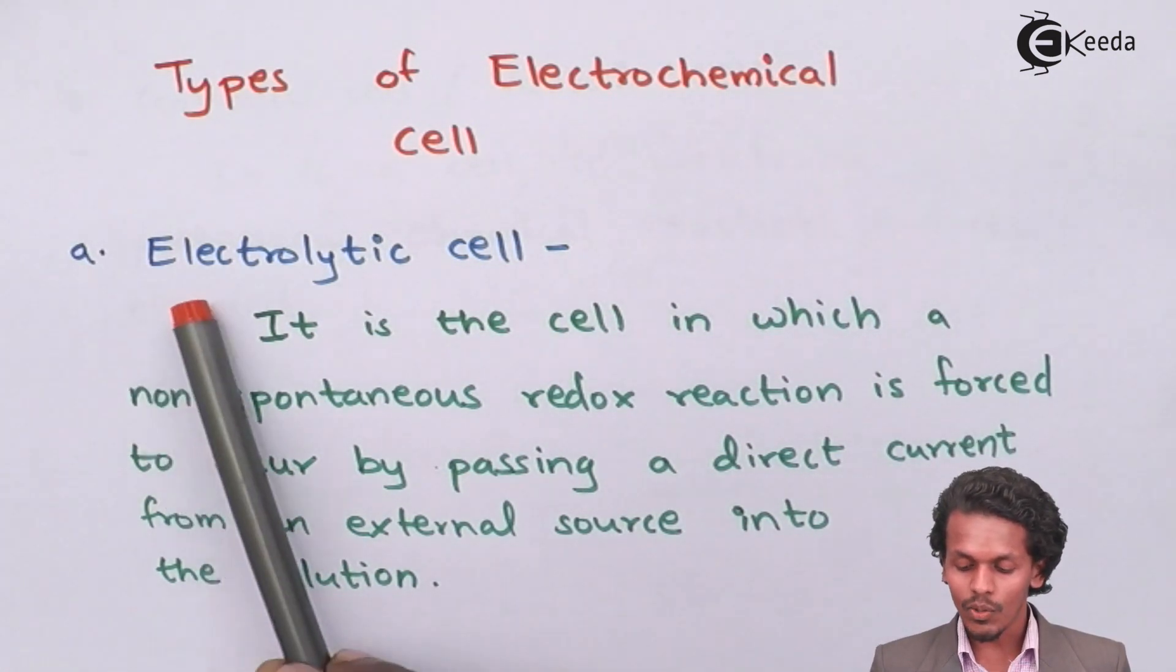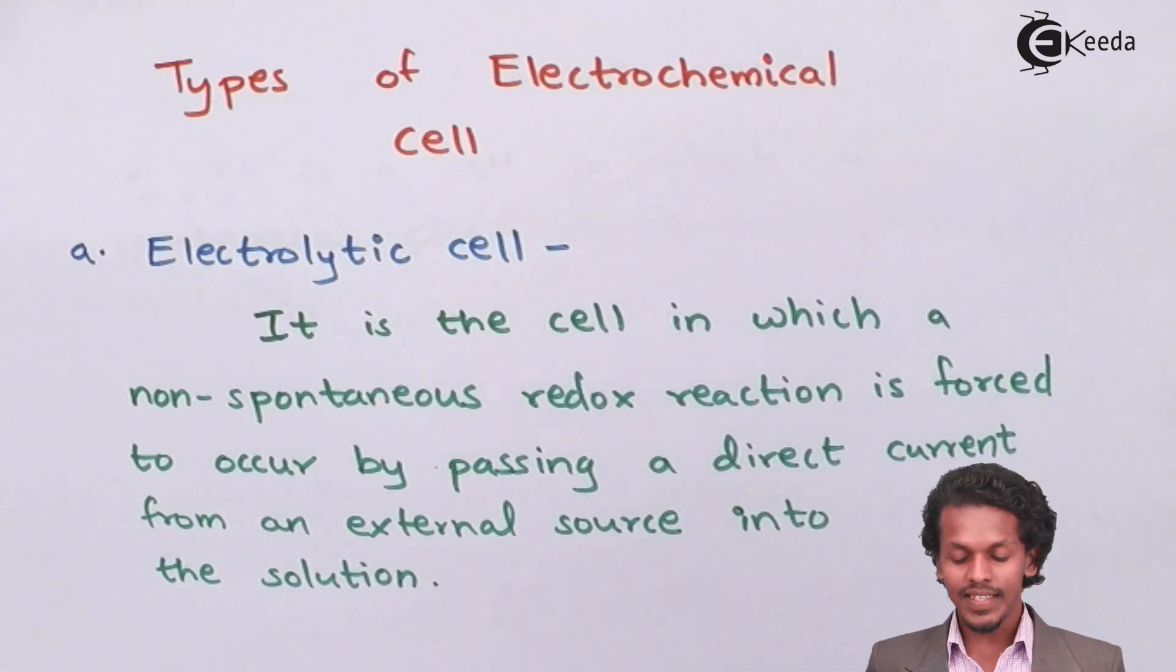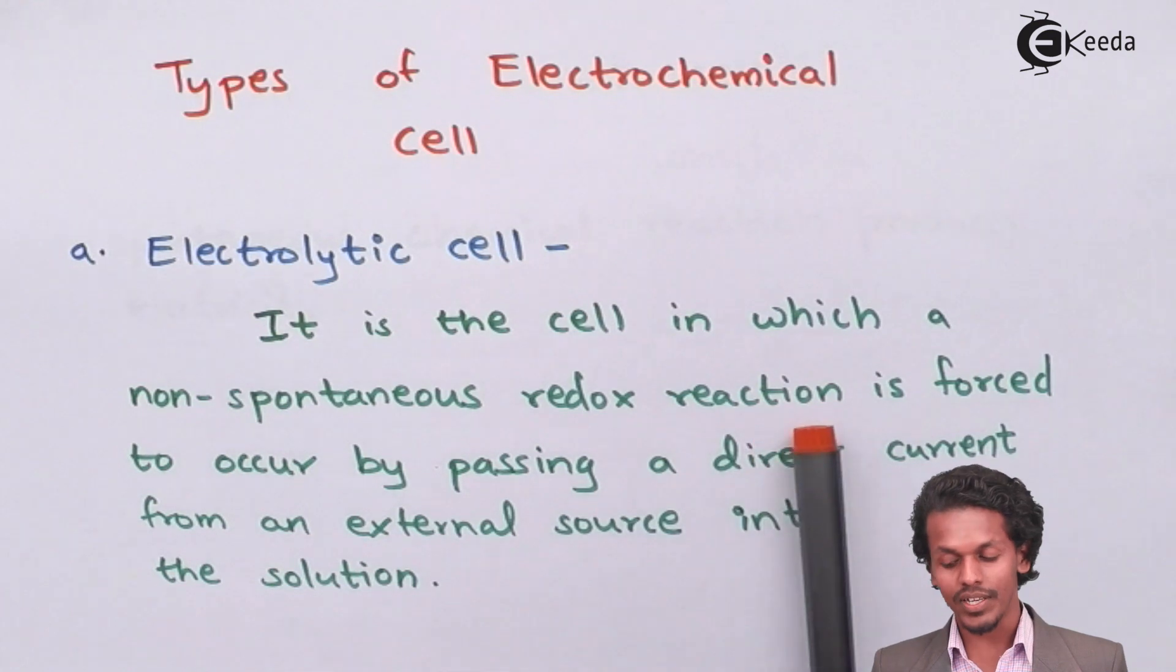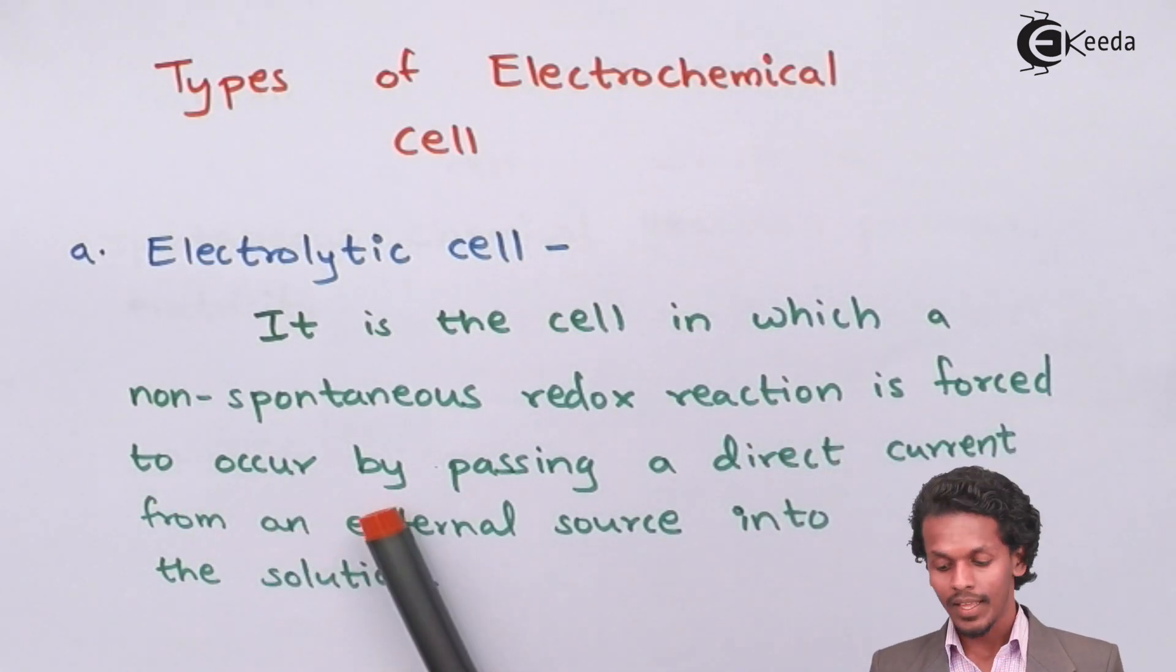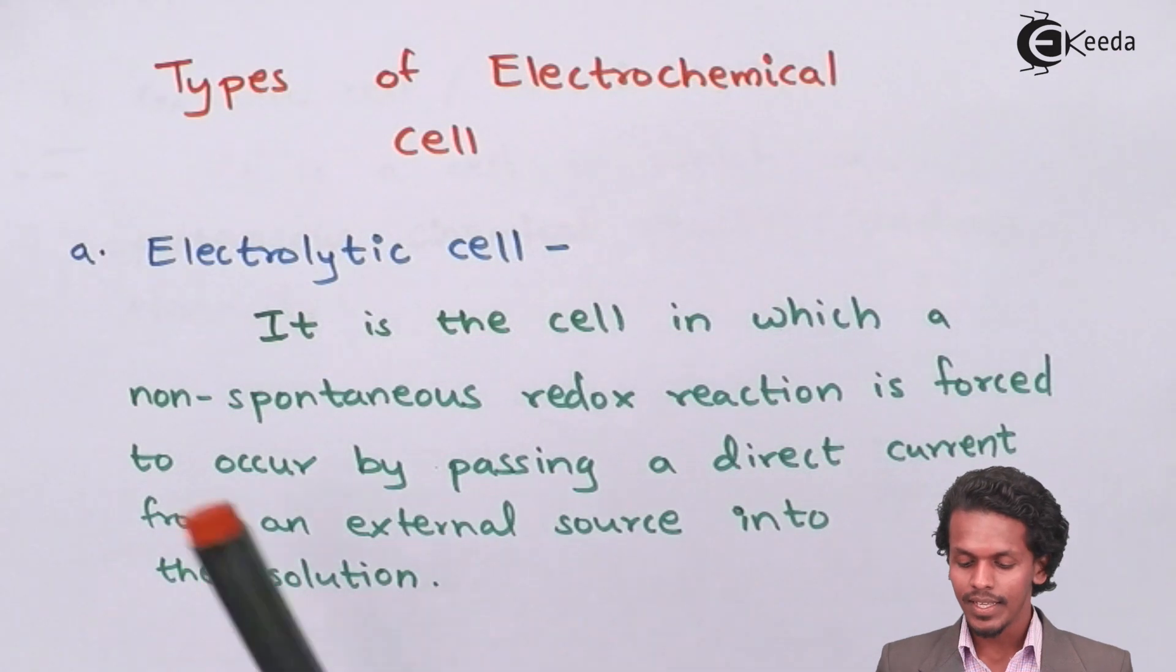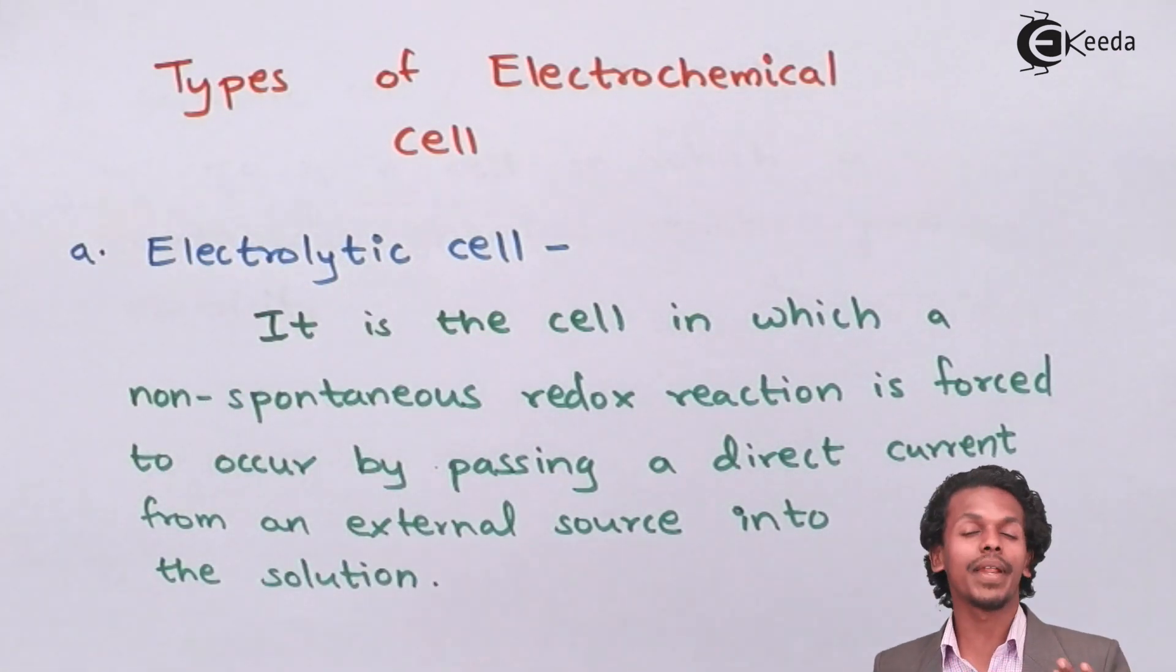The first one is electrolytic cell. It says it is the cell in which a non-spontaneous redox reaction is forced to occur by passing a direct current from an external source into a solution. It means, I could explain to you in a better way. Electro means electricity and lytic means breaking. So breaking of what?